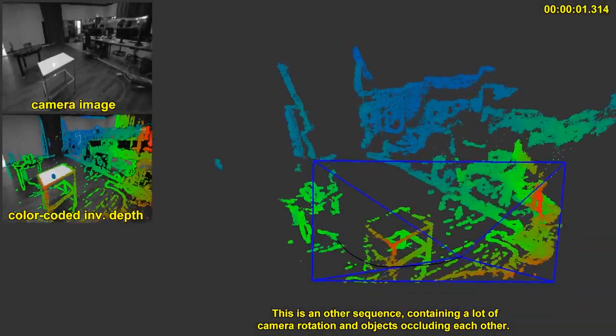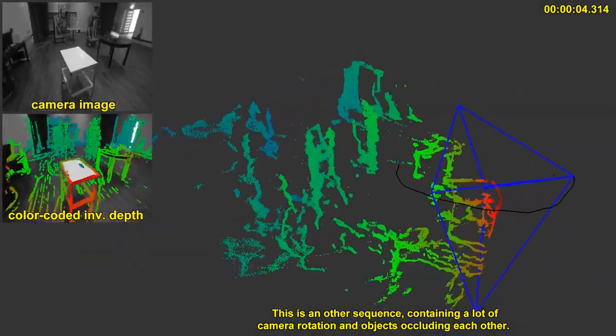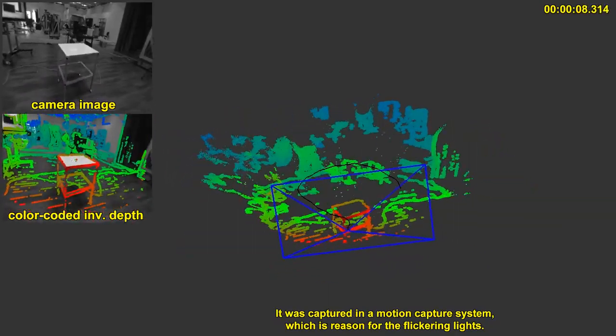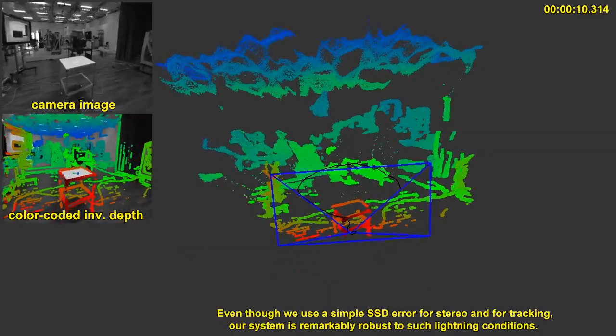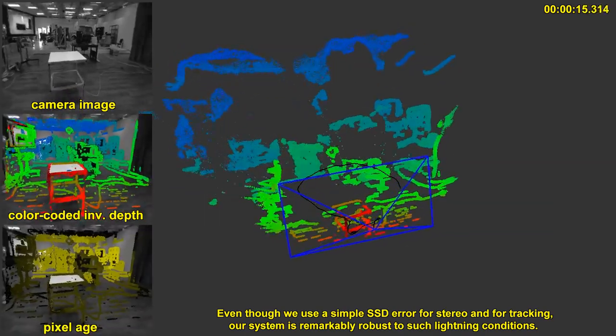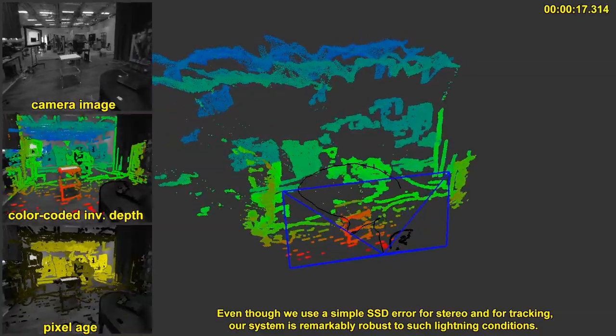This is another sequence containing a lot of camera rotation and objects occluding each other. It was captured in a motion capture system which is the reason for the flickering lights. Even though we use a simple SSD error for stereo and for tracking, our system is remarkably robust to such lightning conditions.